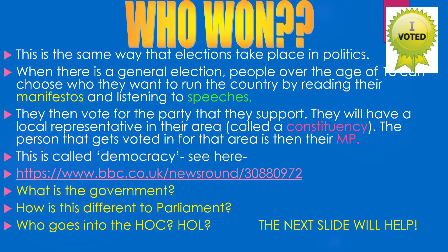That election that we would have done in class — or you're doing yourself at home — that's sort of exactly the same way elections take place in politics. When there's a general election, each party puts out their manifesto: a list of what they want to do and what their priorities will be. They give speeches, they hand out leaflets, they go on TV shows and promote their interests. The electorate — the people who are going to vote — listen to each of the parties and then decide which party they want to vote for.